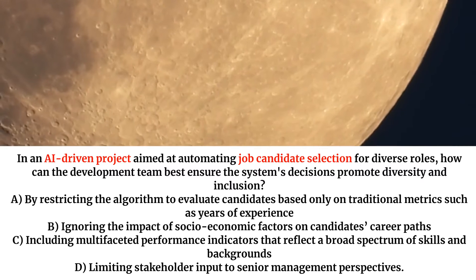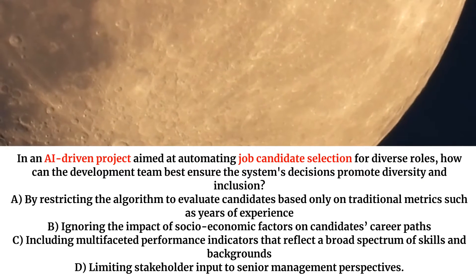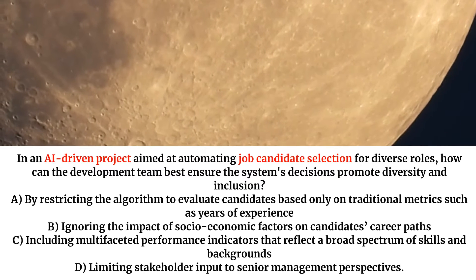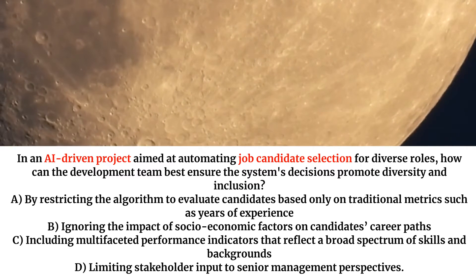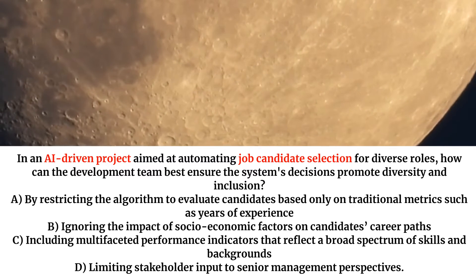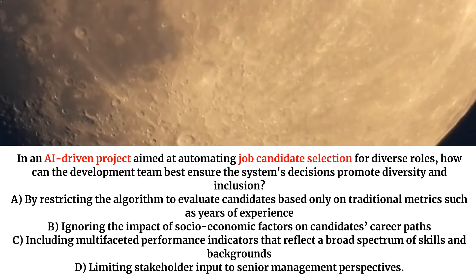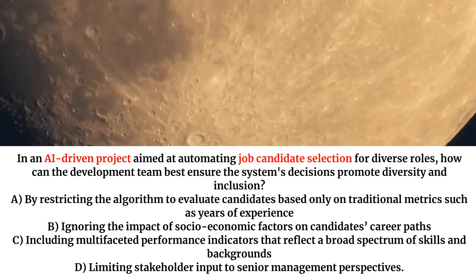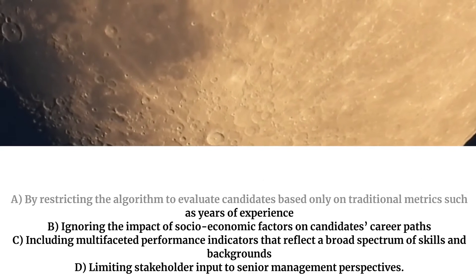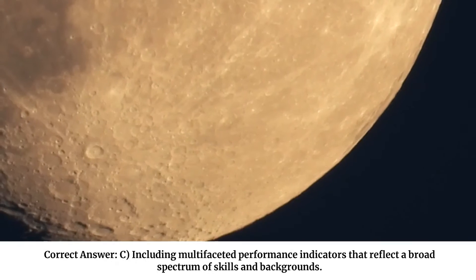In an AI-driven project aimed at automating job candidate selection for diverse roles, how can the development team best ensure the system's decisions promote diversity and inclusion? A. By restricting the algorithm to evaluate candidates based only on traditional metrics such as years of experience. B. Ignoring the impact of socioeconomic factors on candidates' career paths. C. Including multifaceted performance indicators that reflect a broad spectrum of skills and backgrounds. D. Limiting stakeholder input to senior management perspectives.